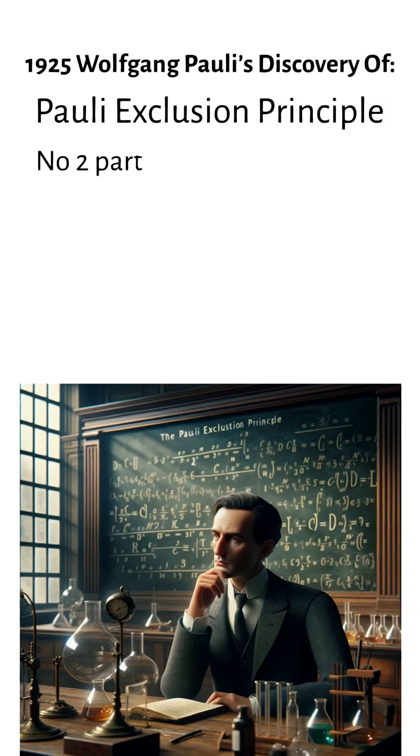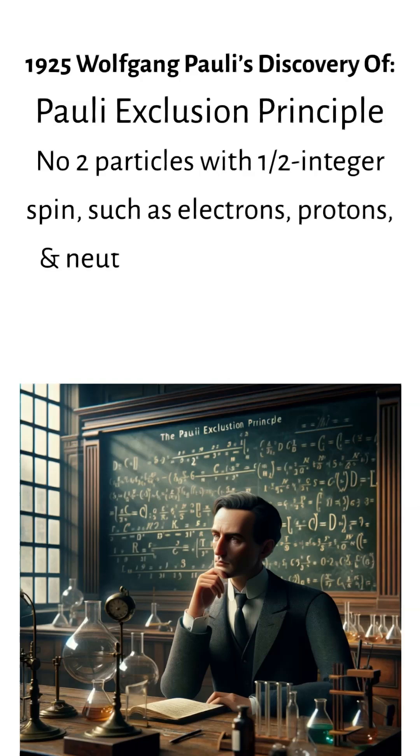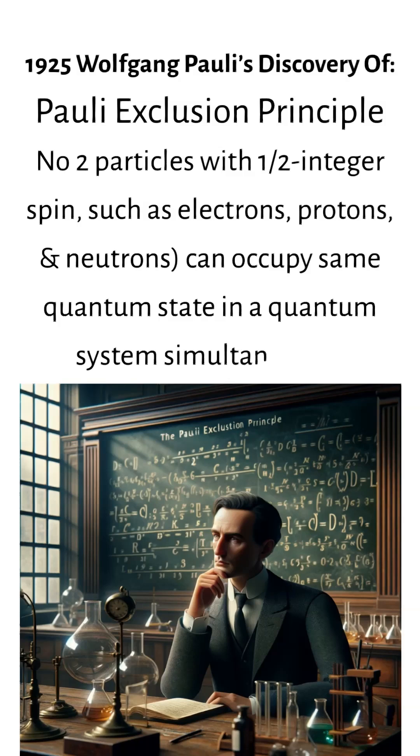This principle states that no two fermions, particles with half-integer spin, such as electrons, protons, and neutrons, can occupy the same quantum state within a quantum system simultaneously.